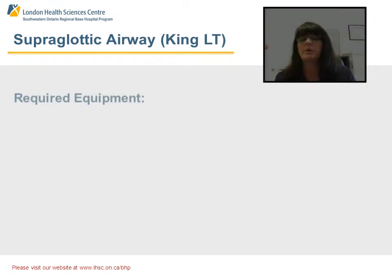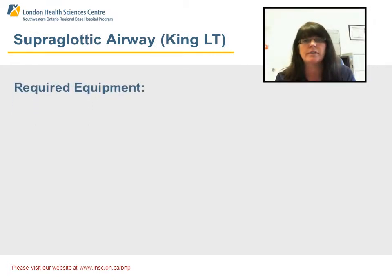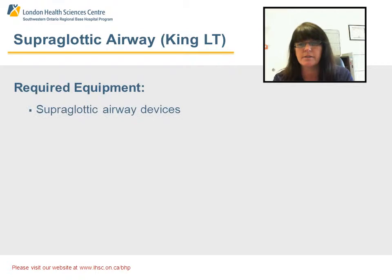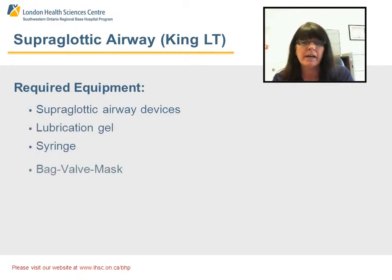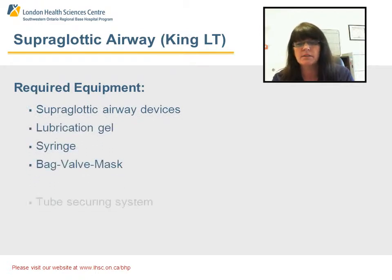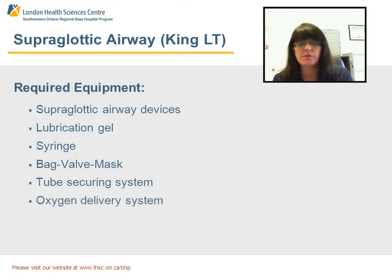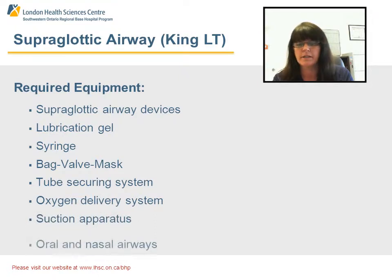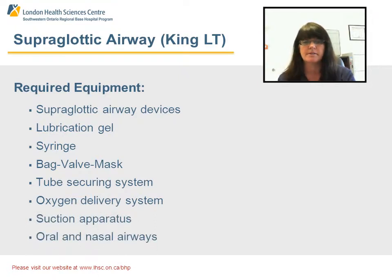The equipment required for insertion of the KingLT includes the supraglottic airway device, lubrication gel, a syringe, bag valve mask, tube securing system, oxygen delivery system, suction apparatus, and some oral and nasal airways.